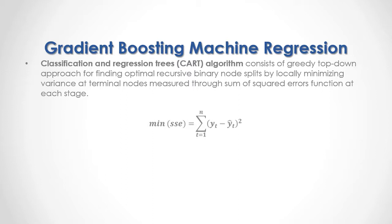As a formula, we have the minimization of sum of square errors, which equals the sum from the first to the last of the difference between the output target feature data minus the terminal node output target feature mean, that result raised to the power of 2.